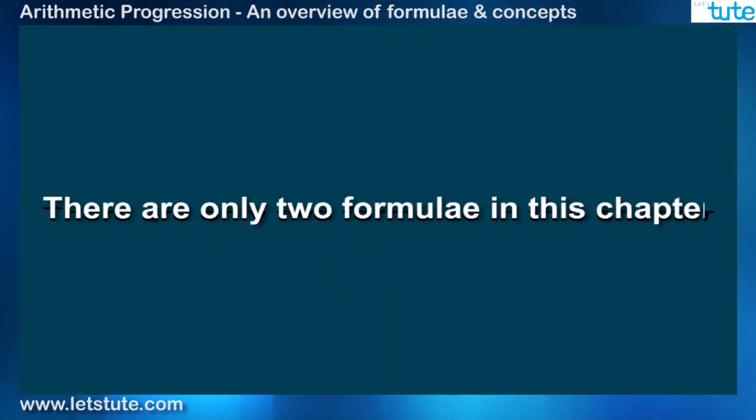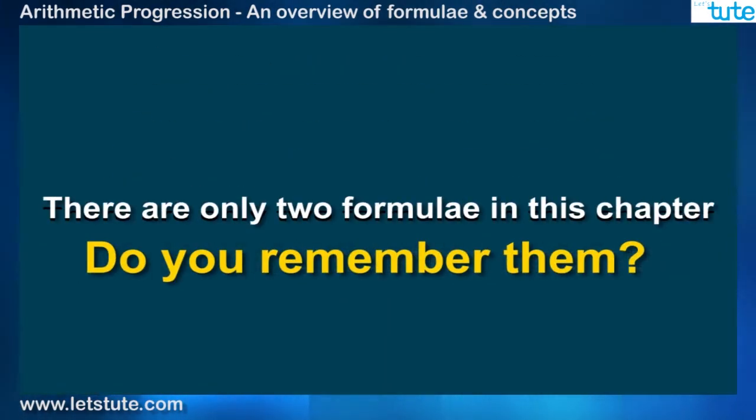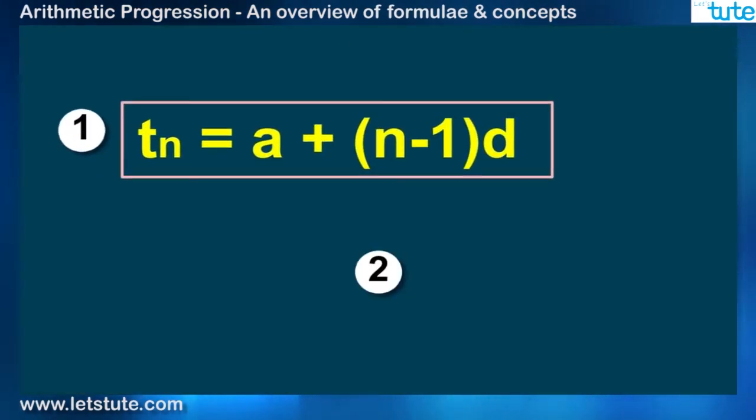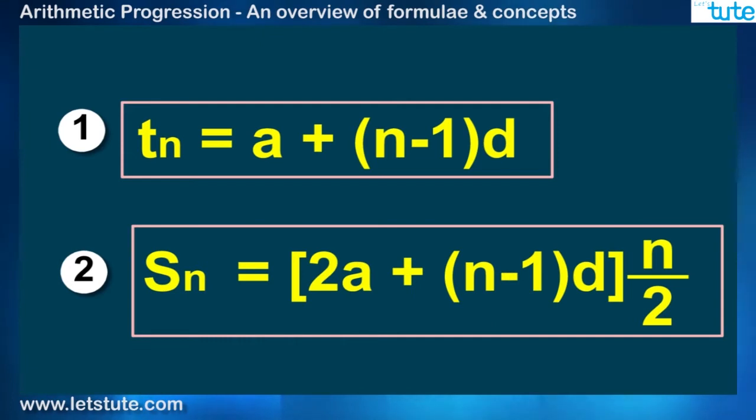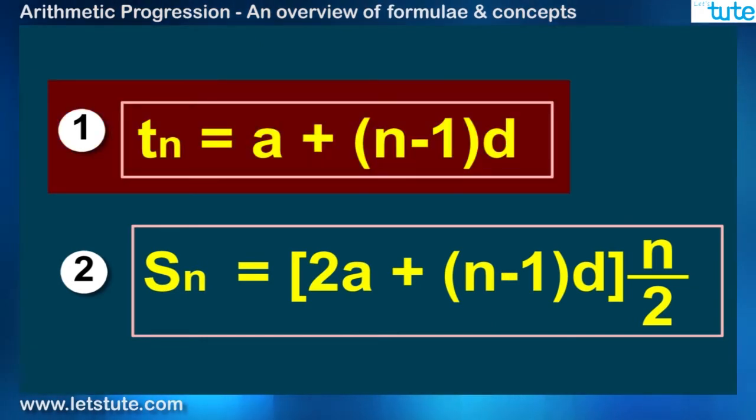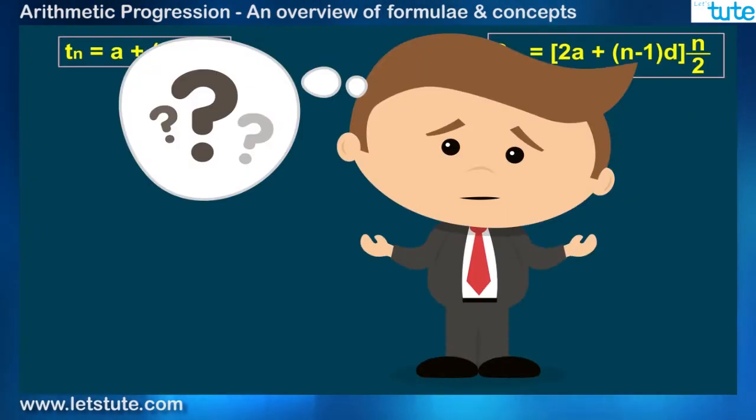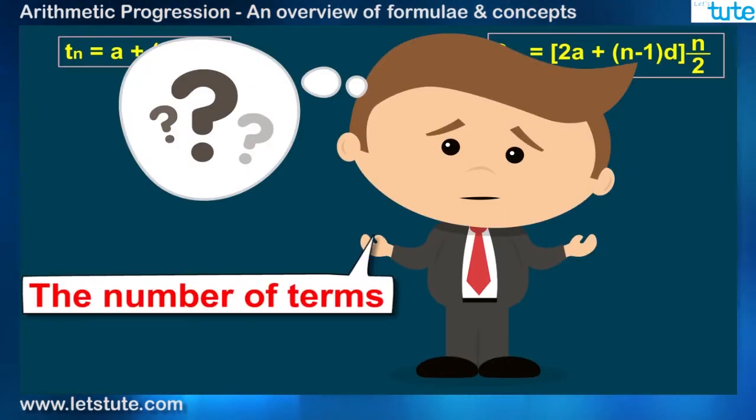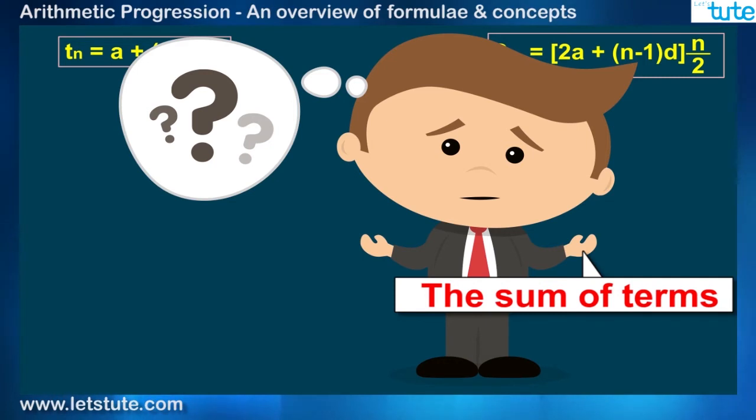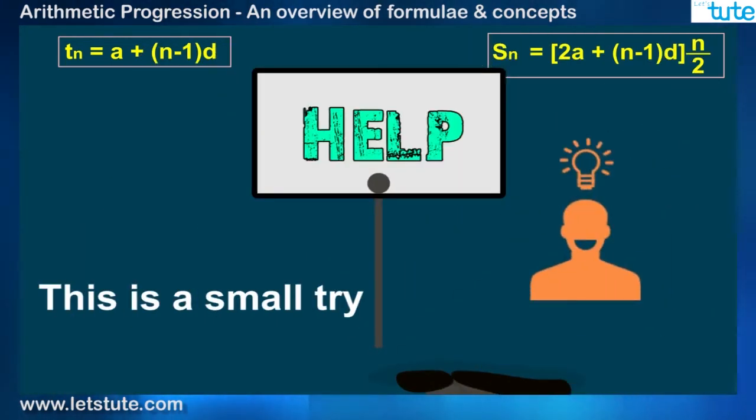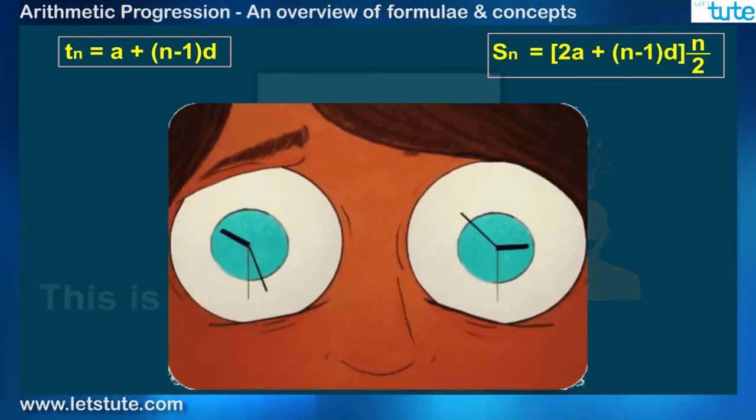There are two formulae in this chapter. Do you remember them? The first one is Tn and the second one is Sn. The whole chapter revolves around these two formulae but still there is a lot of confusion about the terms, the number of terms, the sum of terms and much more. This is a small try to help you all in understanding and applying the formulae.